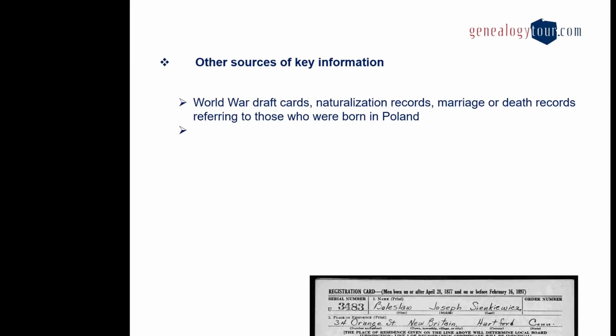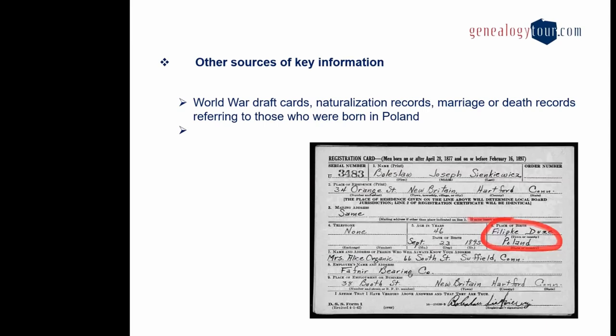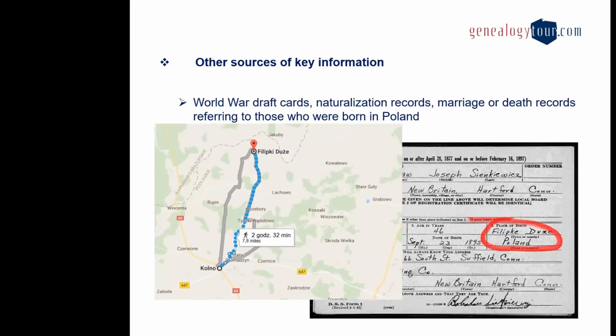There are also other sources of important information about one's place of origin, such as World War draft cards, naturalization records, and marriage or death records. It's important to focus on documents referring to those who emigrated from Poland to the US, and the older the record is, the better your chances that the information is accurate. Death records from people who emigrated in the late 1800s or early 1900s and died in the 1950s might just list the place of birth as Poland — which is not enough. We need to spend more time finding an exact location.